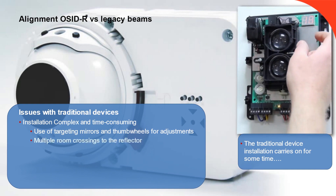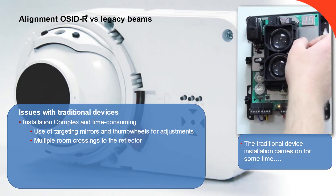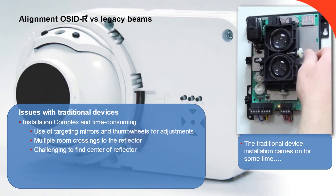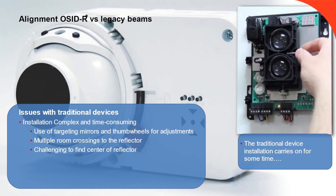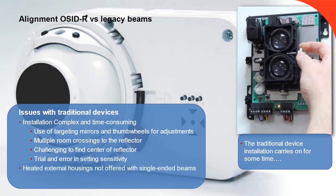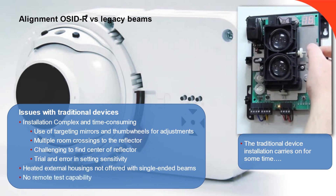The next step involves using the thumb wheels to try and get the LED readout to the highest possible figure, representing the accuracy of the device. Once the user achieves this, or gets bored trying, they can start the sensitivity configuration — often with a nagging feeling that they could have done better with the alignment. Heated enclosures are not available, and there is no remote test facility. Now, where did I put those ladders?